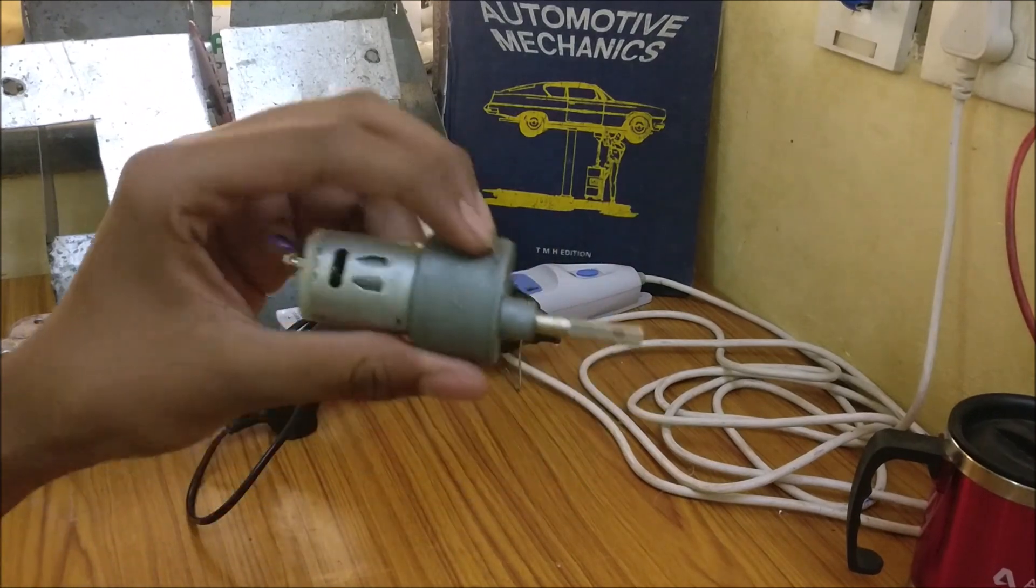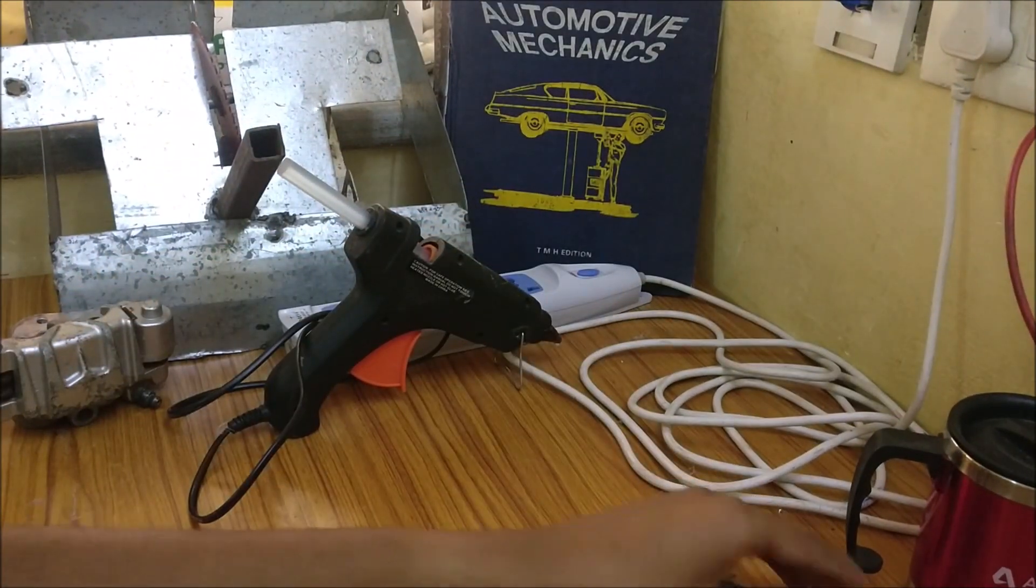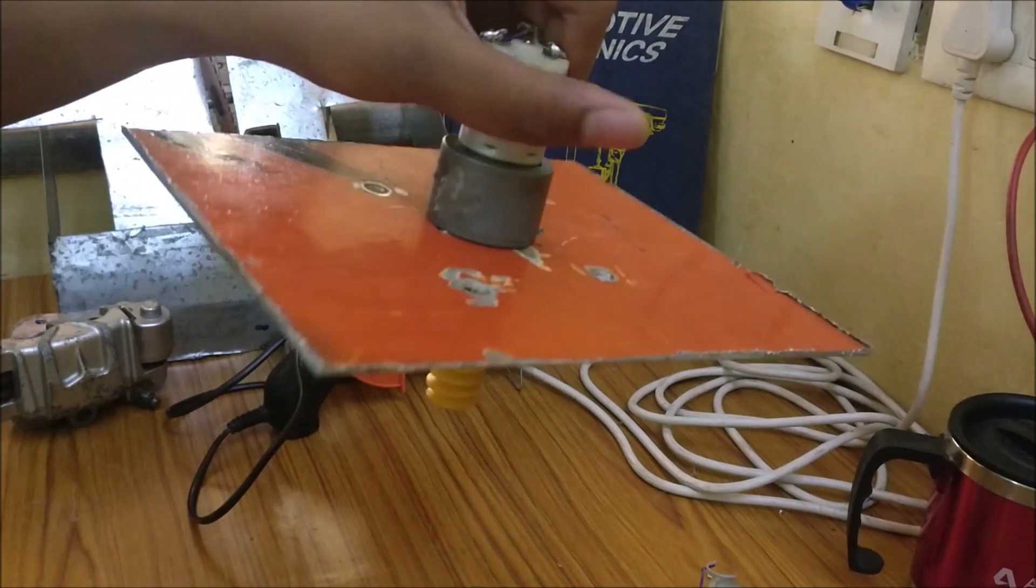I am using a 200rpm motor. It costs almost 350 rupees in the market and I am going to assemble it with this worm gear. This is how it looks with a motor and worm assembly with the chassis.